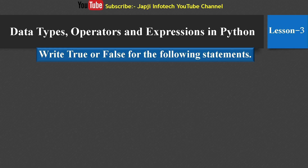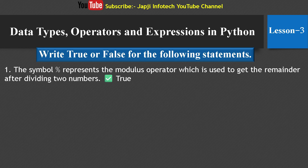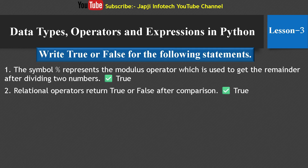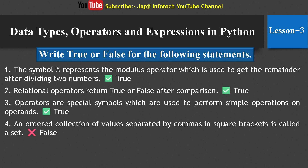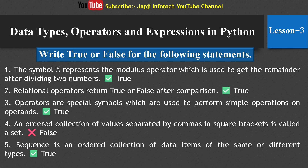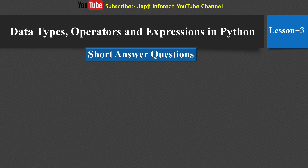Now, the true or false section. First: The percentage sign represents the modulus operator, used to get the remainder after dividing two numbers — True. Second: Relational operators return true or false after comparison — True. Third: Operators are special symbols used to perform operations on operands — True. Fourth: An ordered collection of values in square brackets is called a set — False. Fifth: A sequence is an ordered collection of data items of the same or different types — True.